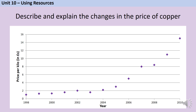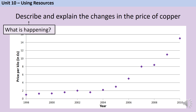Before we start learning about these novel methods of metal extraction, we need to think about why they're necessary. This is a graph showing the price of copper and how it changed over the 12 years from 1998 to 2010. Pause the video and try to write a sentence describing how the price has changed over time, and if you can, try to explain why. Remember, in an exam, describe means to say what is happening, whereas explain means to say why it is happening.